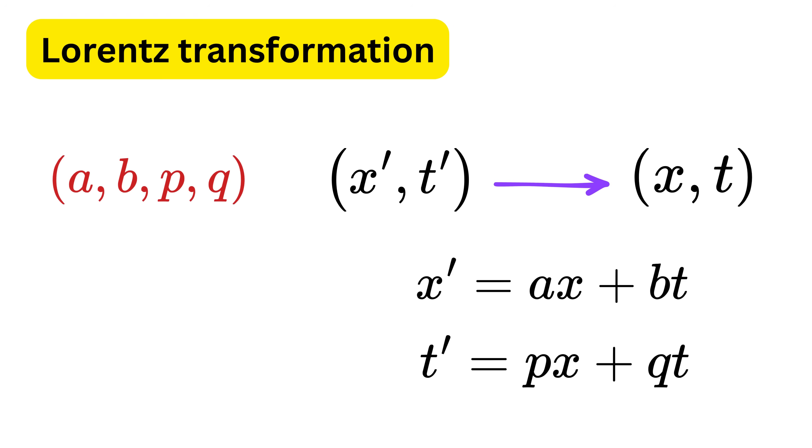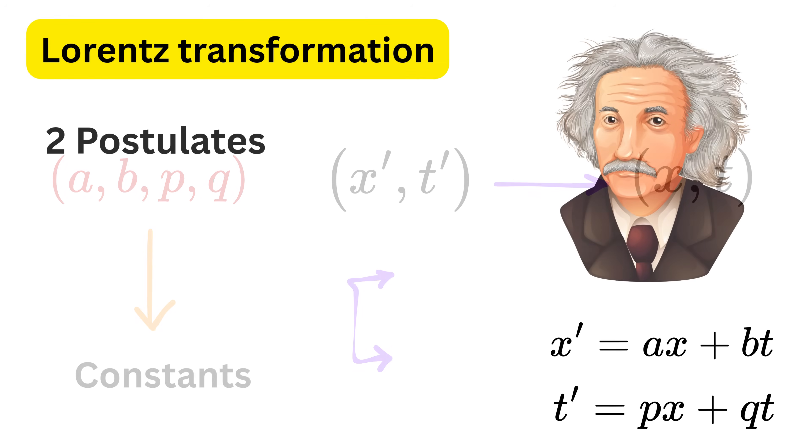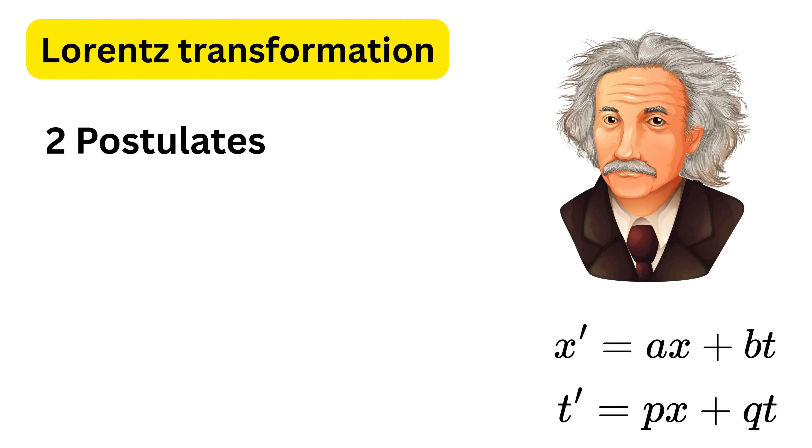Where a, b, p, and q are some constant values. In simple words, space and time are no longer separate. They're mixed together. Now we find the values of these constants using two basic postulates that Einstein proposed.